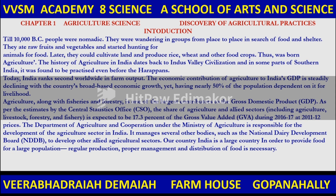Today, India ranks second in the world's largest farm output. The economic contribution of agriculture to India's GDP is steadily declining with the country's broad-based economic growth, yet nearly 50% of the population is dependent on it for livelihood. Agriculture, along with fisheries and forestry, is one of the largest contributors to the gross domestic product. As per estimates of the Central Statistics Office (CSO), the share of agriculture and allied sectors — including agriculture, livestock, forestry and fishery — is expected to be 17.3% of the gross value added during 2016–17.